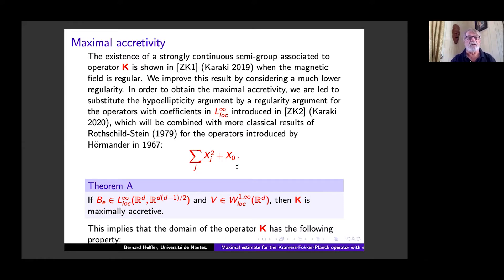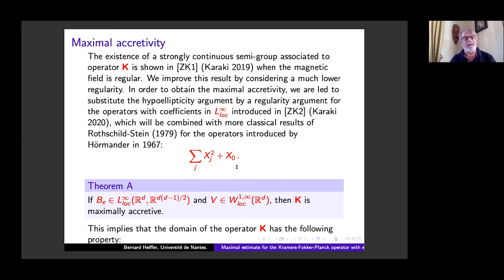The first theorem — Theorem A — says that under a rather weak regularity assumption, that is, only L^∞_loc for B, and W^{1,∞}_loc for V (because we only meet ∇V), then the operator K satisfies D(K_min) equal to D(K_max).